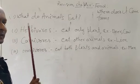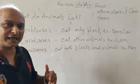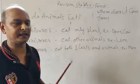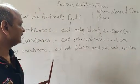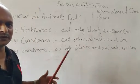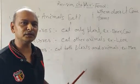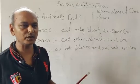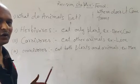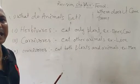The second category is Carnivores. Carnivores means animals that eat other animals. For example, the lion — the lion is carnivorous. Animals that eat other animals are called carnivorous animals.